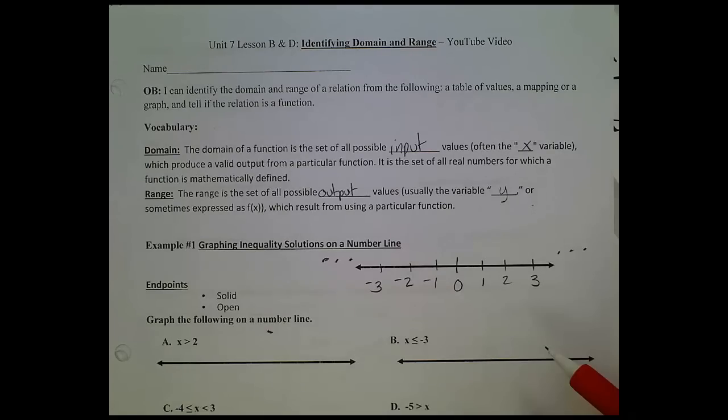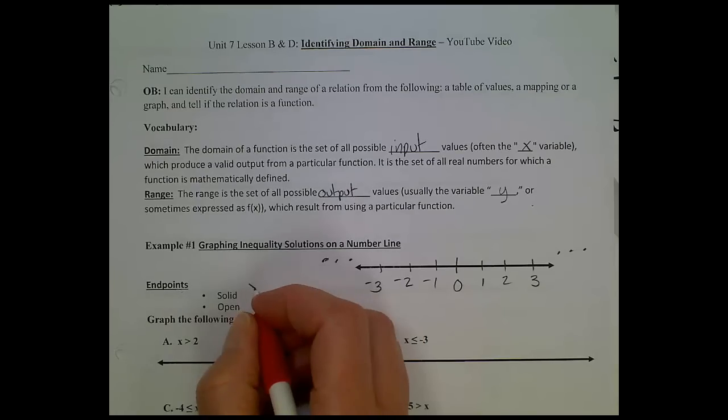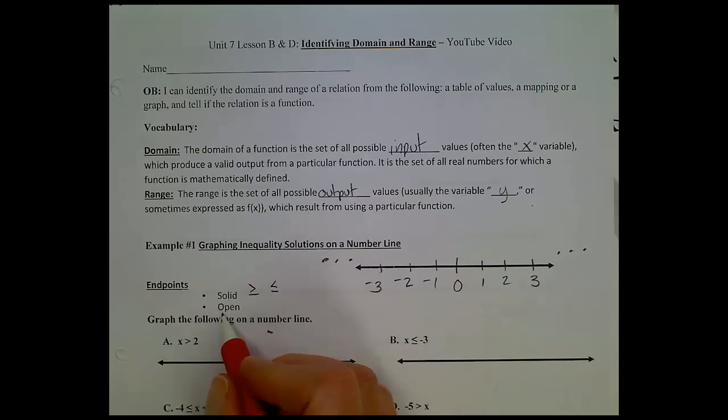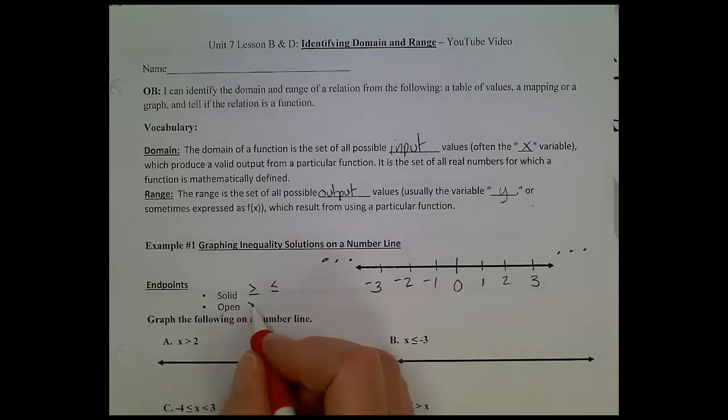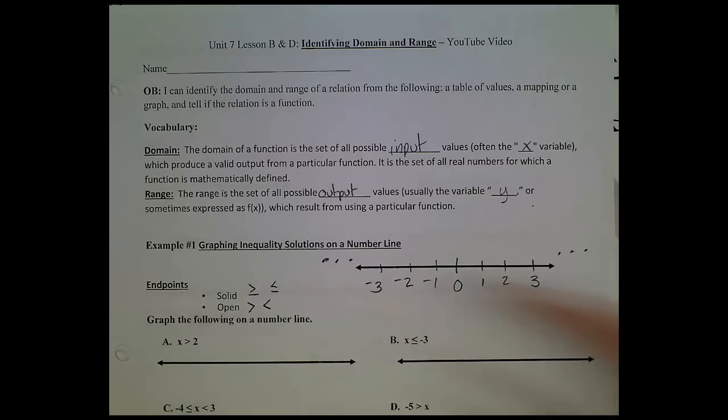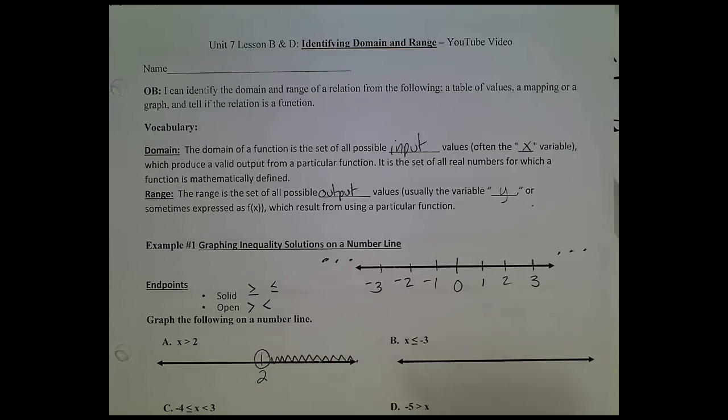Now, when we graph solutions on this number line, we have solid circles and open circles on our endpoints. We use a solid circle, or dot, if that value is part of our solution, and we note that by looking at the less than or greater than or equal to signs. Now, we have an open dot on that value if it's not part of the solution, and when it's not part of the solution, we see that we have a less than sign or a greater than sign, not an or equals to. Okay, so looking at the first example, if x is greater than 2, I'm just going to plot 2, I'm going to have an open circle on 2, and I'm going to shade everywhere x is greater than 2.